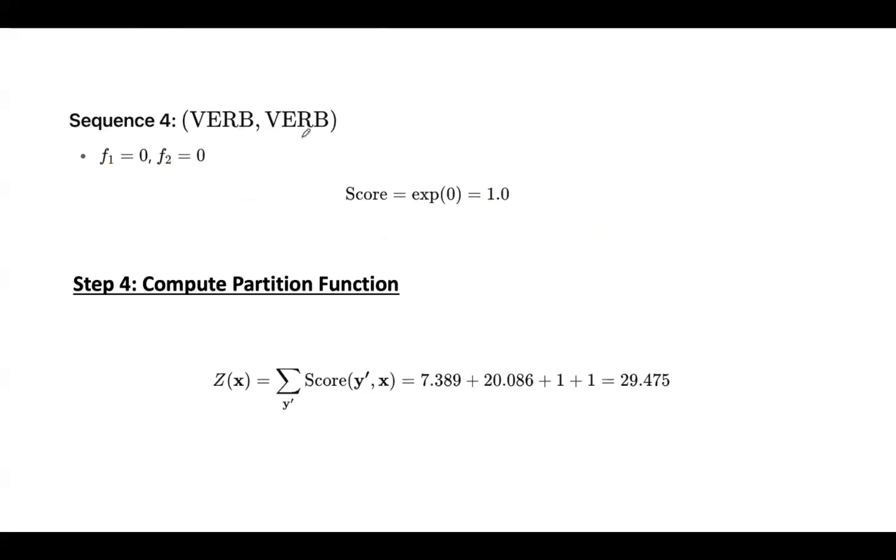Now take verb-verb combination. Again, there is no verb-verb sequence, so f1 value is 0. And as the tag is verb which is not appropriate for fish, this f2 value is also 0. Again, you will get score as 1.0 only. So we calculated individual scores for all the sequences.